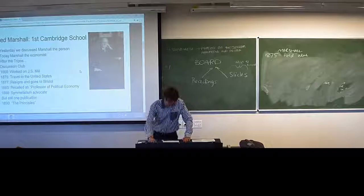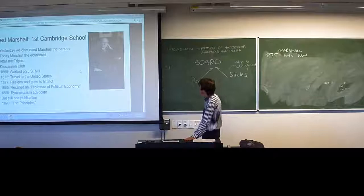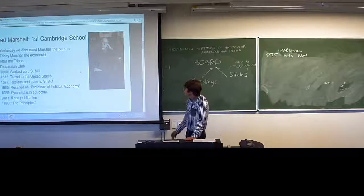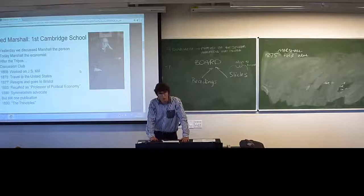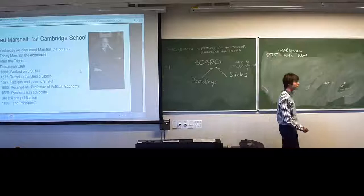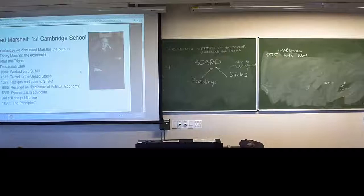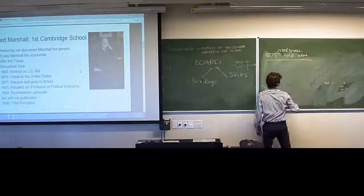In 1877, he resigns his chair in Cambridge. His original chair was actually that of political philosophy, and in fact he started with the chair of physics. He goes to Bristol, where he starts writing up some of his early thoughts — things that we now take for granted. He returns as professor of political economy to Cambridge in 1885, and the first contribution we see published is his discussion on symmetallism, which deserves a bit of a discussion.